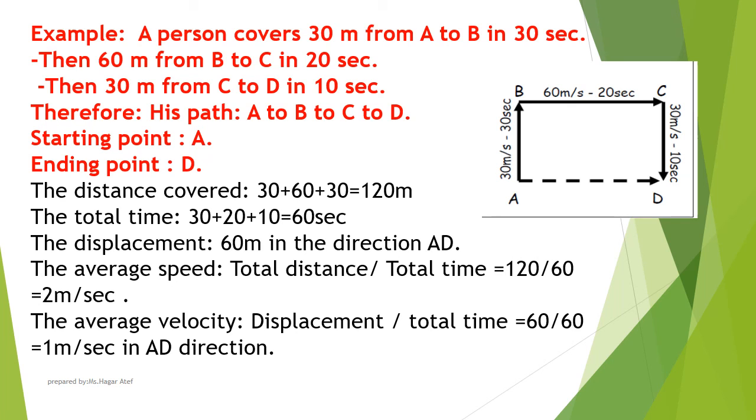And the average speed: total distance divided by total time equals 120 divided by 60 equals 2 meters per second. The average velocity is displacement divided by total time equals 60 divided by 60 equals 1 meter per second in AD direction.